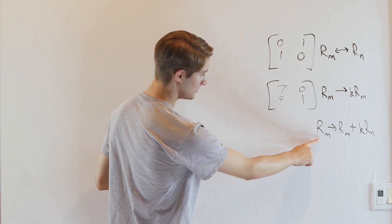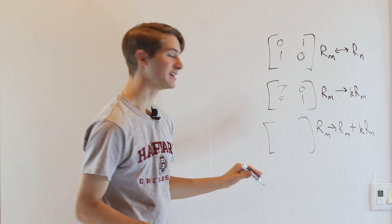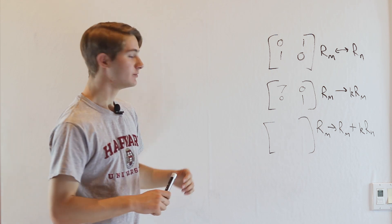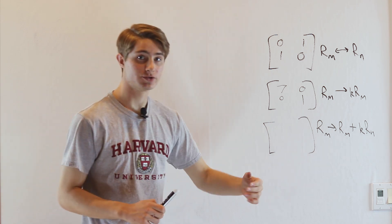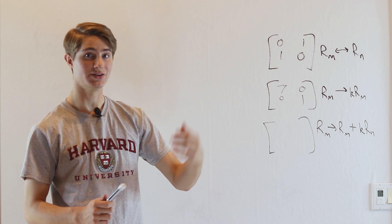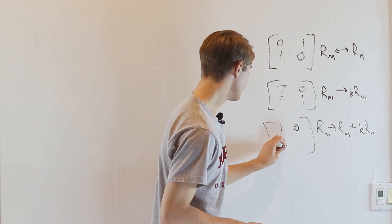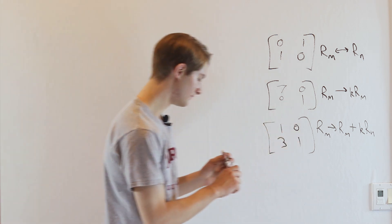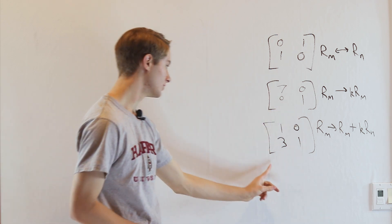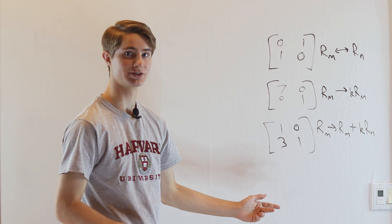The third type is we take a row and add some constant times a different row. For example, if we take [[1, 0], [0, 1]] and add three times the first row to the second row, then we get [[1, 0], [3, 1]], because we do 3 times the first row and add it to the second row. This is another elementary matrix.